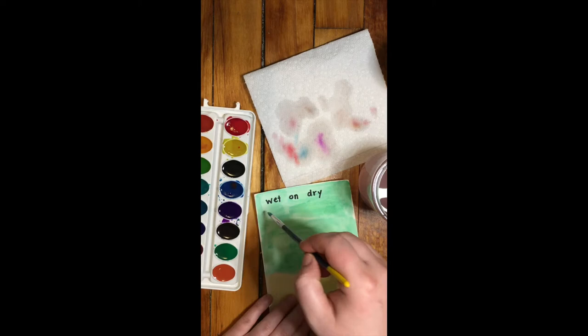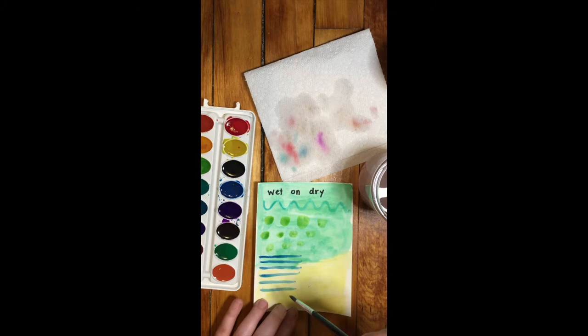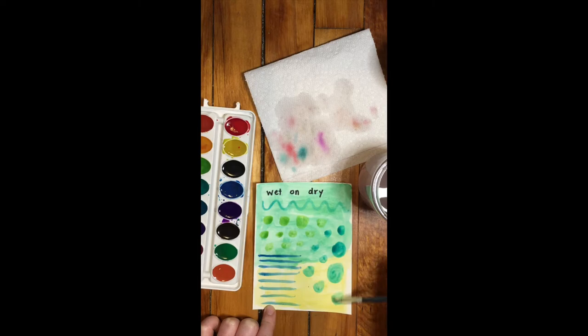So after your wet on dry paper is completely dry, then you can pretty much just paint any designs that you would like onto your dry paint. So here I am just experimenting with some lines and some dots. And you can paint anything you like.